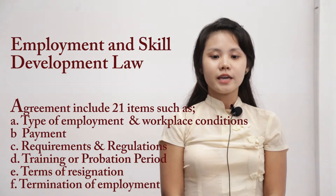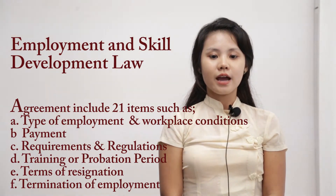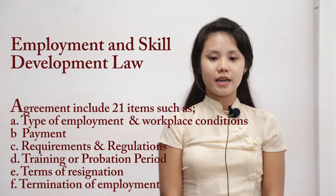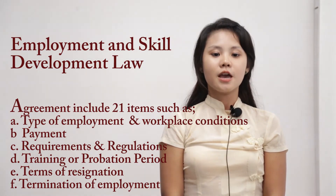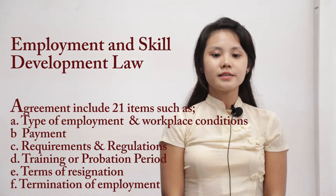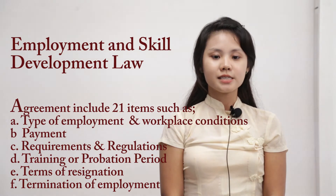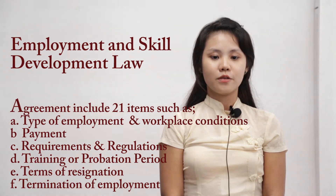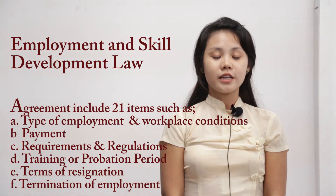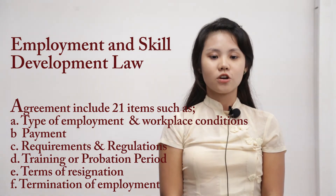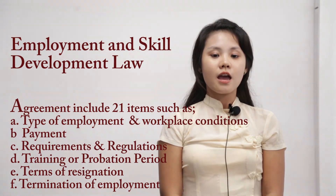The agreement must include 21 items such as: (a) the type of employment and workplace conditions, (b) payment, (c) workplace requirements and regulations, and (d) any training or probation periods, and terms of resignation or termination of employment.